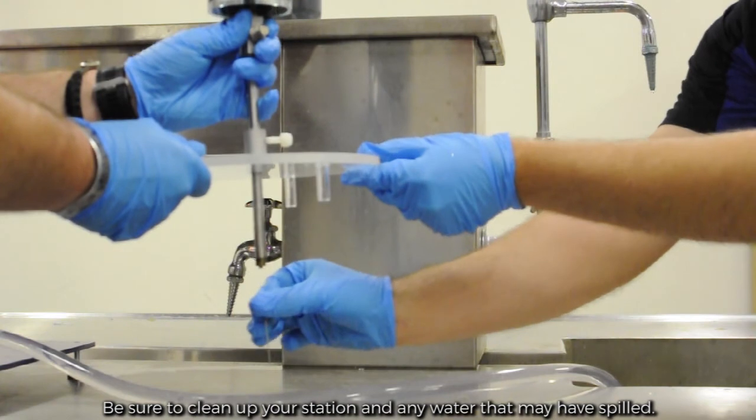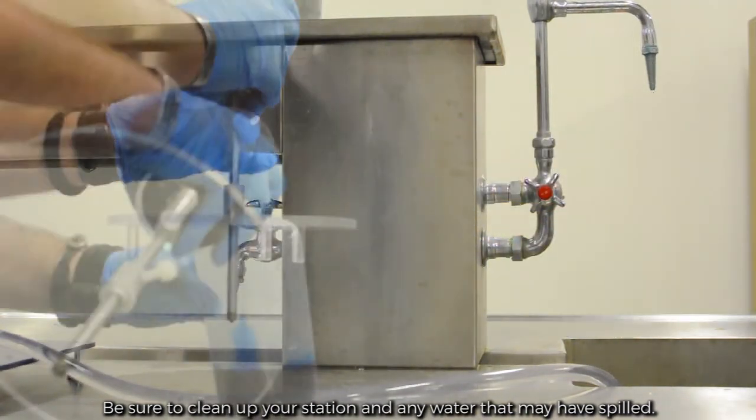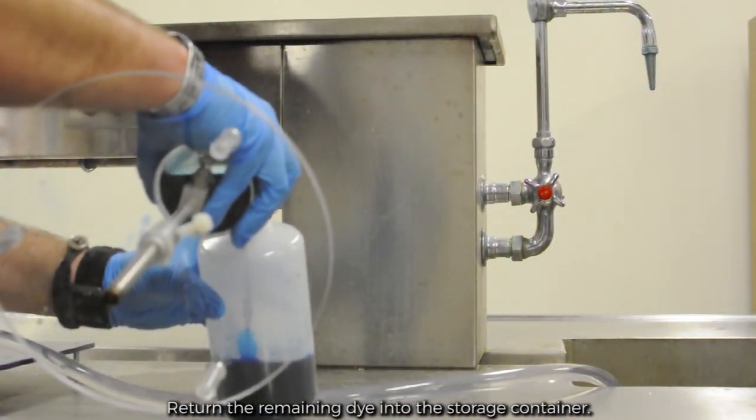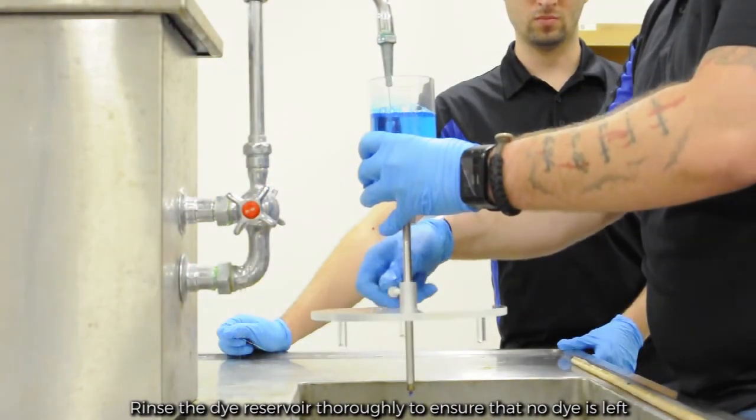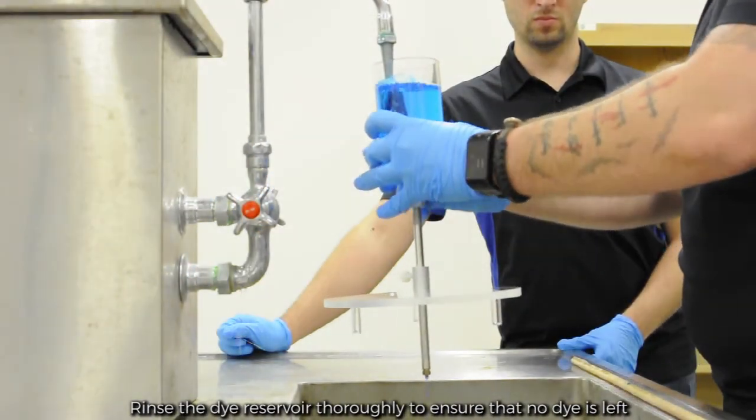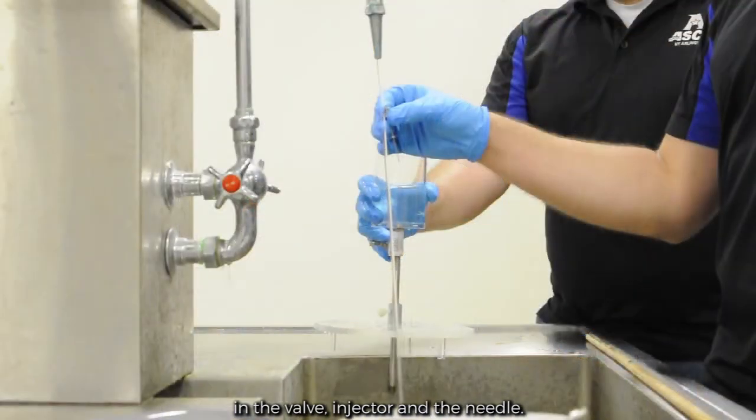Keep your station clean of any water that may have spilled. Return the remaining dye into the storage container. Rinse the dye reservoir thoroughly to ensure that no dye is left in the valve, injector, and the needle.